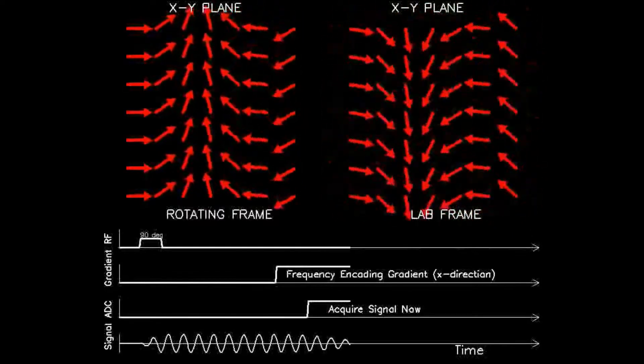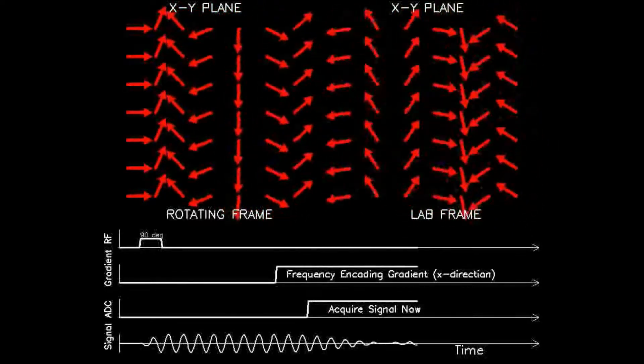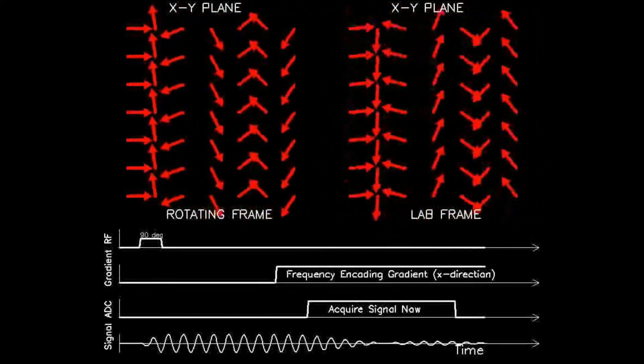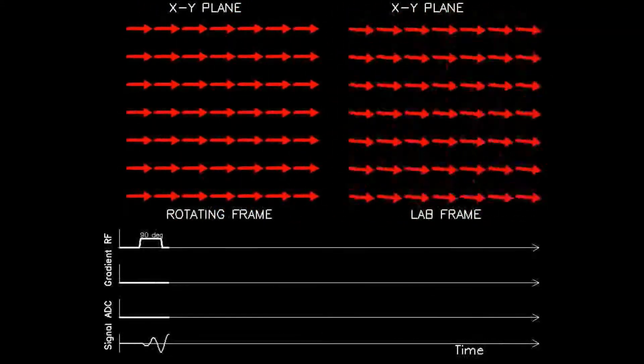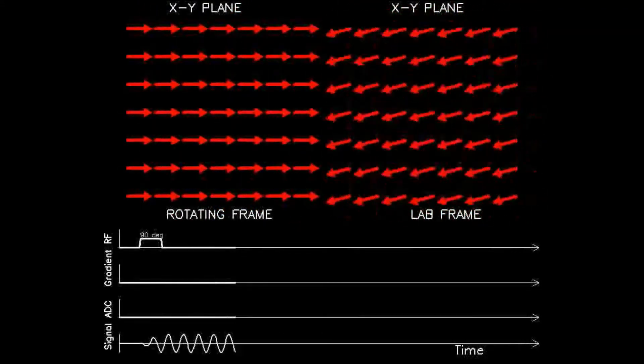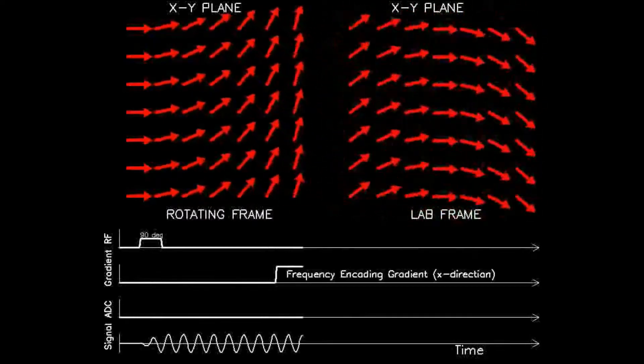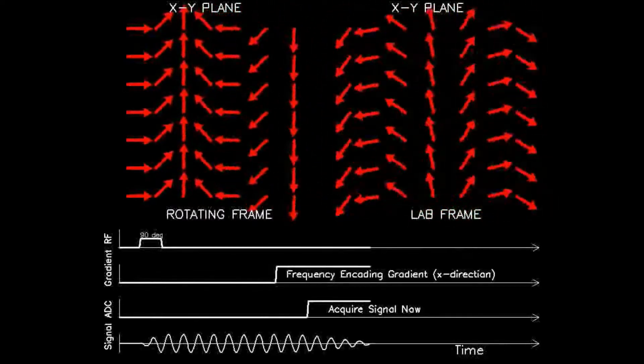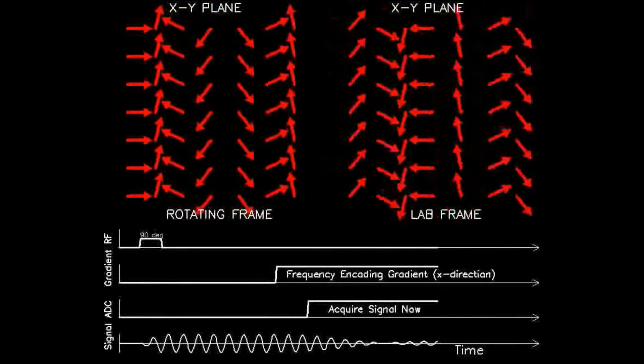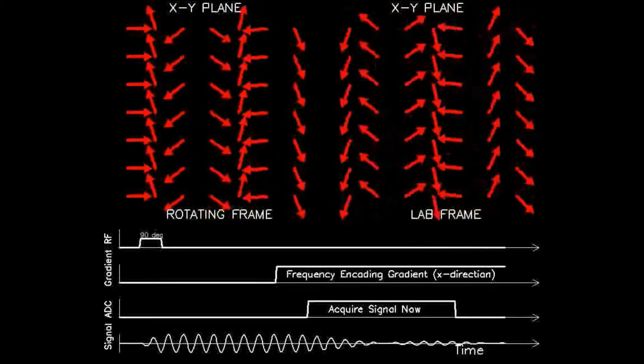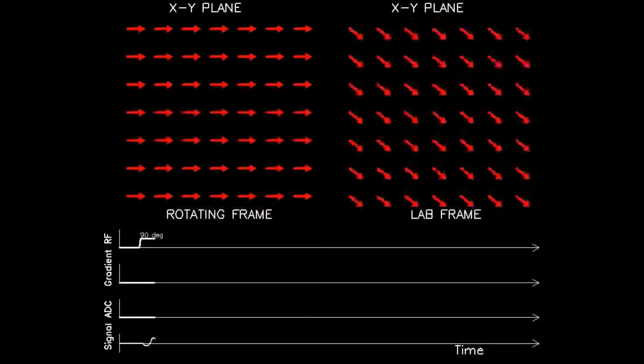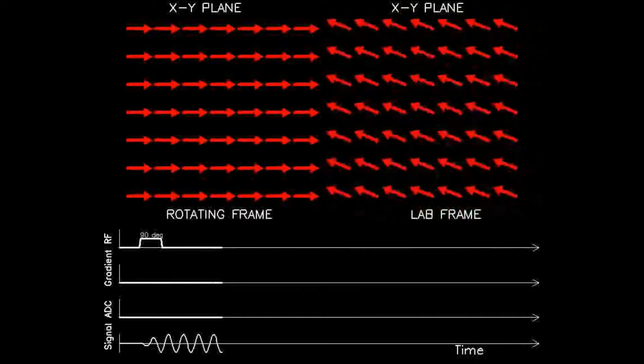The bottom panel shows a set of timelines. The top shows the RF power that causes the initial 90 degree spin flip. The second line shows application of an externally impressed gradient along the x-axis. The third timeline indicates when the detected signal is actually acquired for image processing, and the bottom timeline shows the detected total signal.